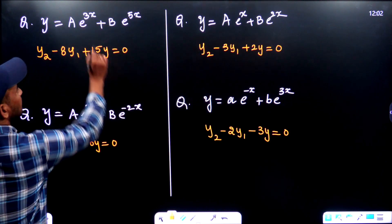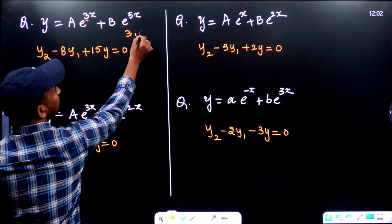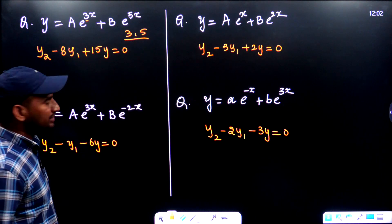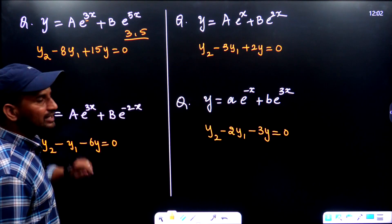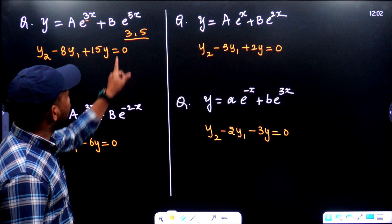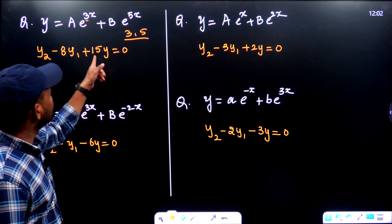Let's look at the same thing one by one. Again, the roots here are 3 and 5. What is the summation of roots? 3 + 5 = 8, that's why minus 8y1. What is the product of roots? 3 × 5 = 15, that's why +15y.